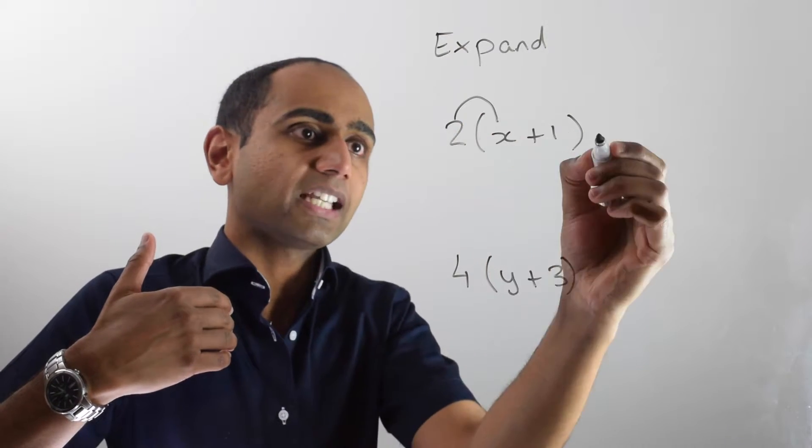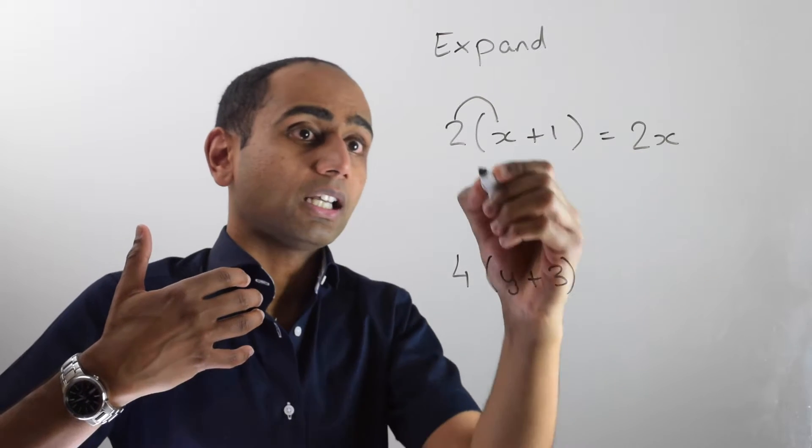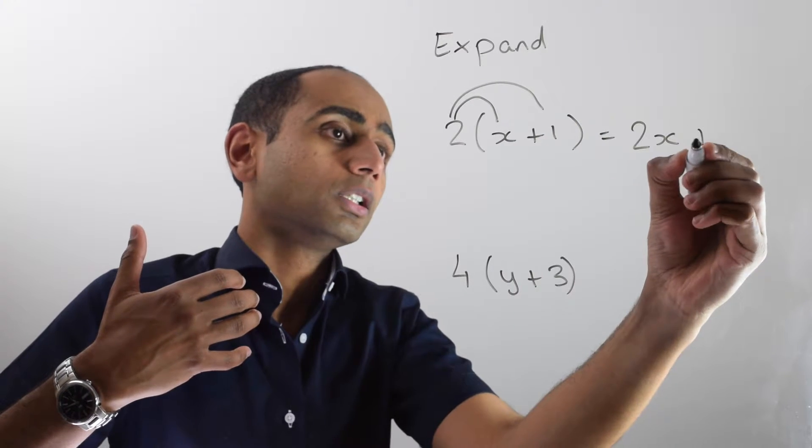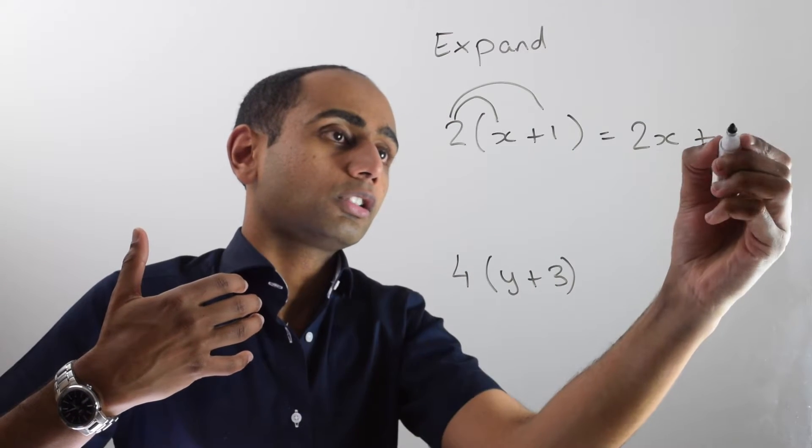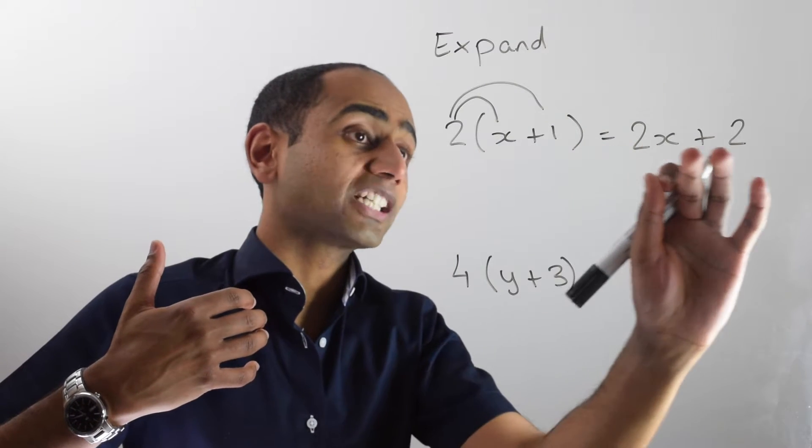So all I can do is use the second method that I showed you before. That's going to be 2 times x. And we know that 2 times x is the same as 2x. And then we're going to add on 2 times positive 1, which is 2. So two lots of (x + 1) equals 2x + 2.